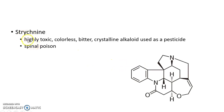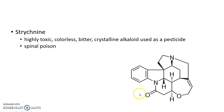Strychnine is a highly toxic, colorless, bitter, crystalline alkaloid used as a pesticide. Strychnine is basically a spinal poison. This picture shows the chemical structure of Strychnine.